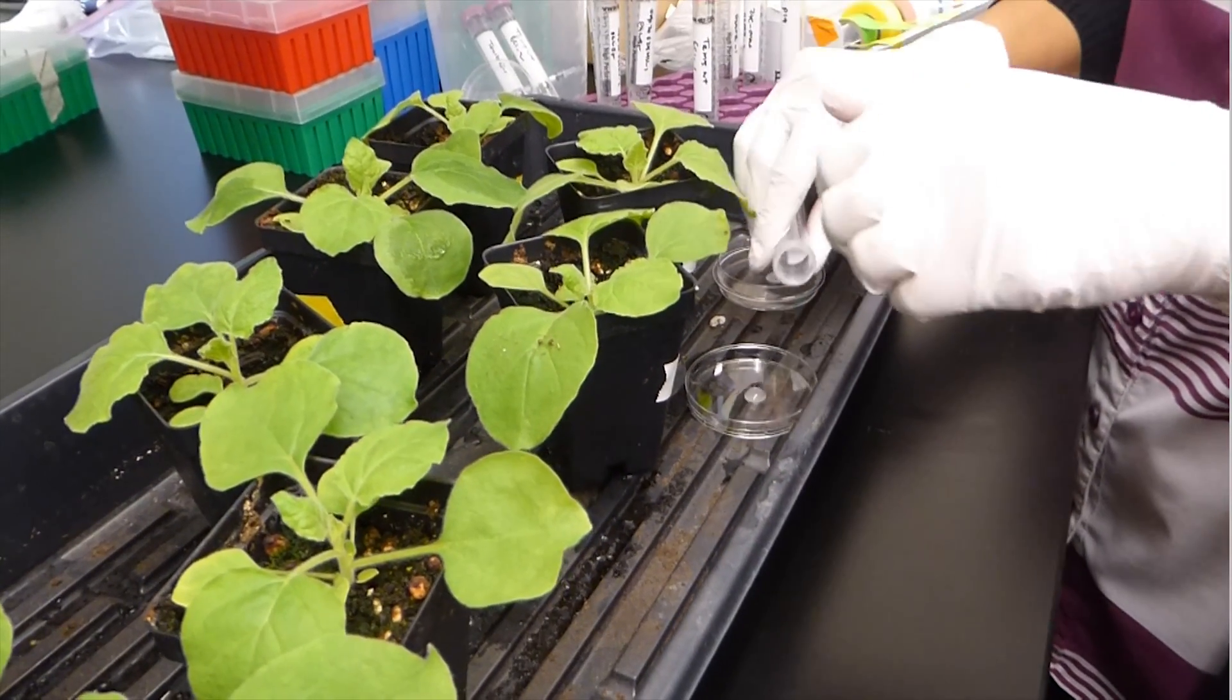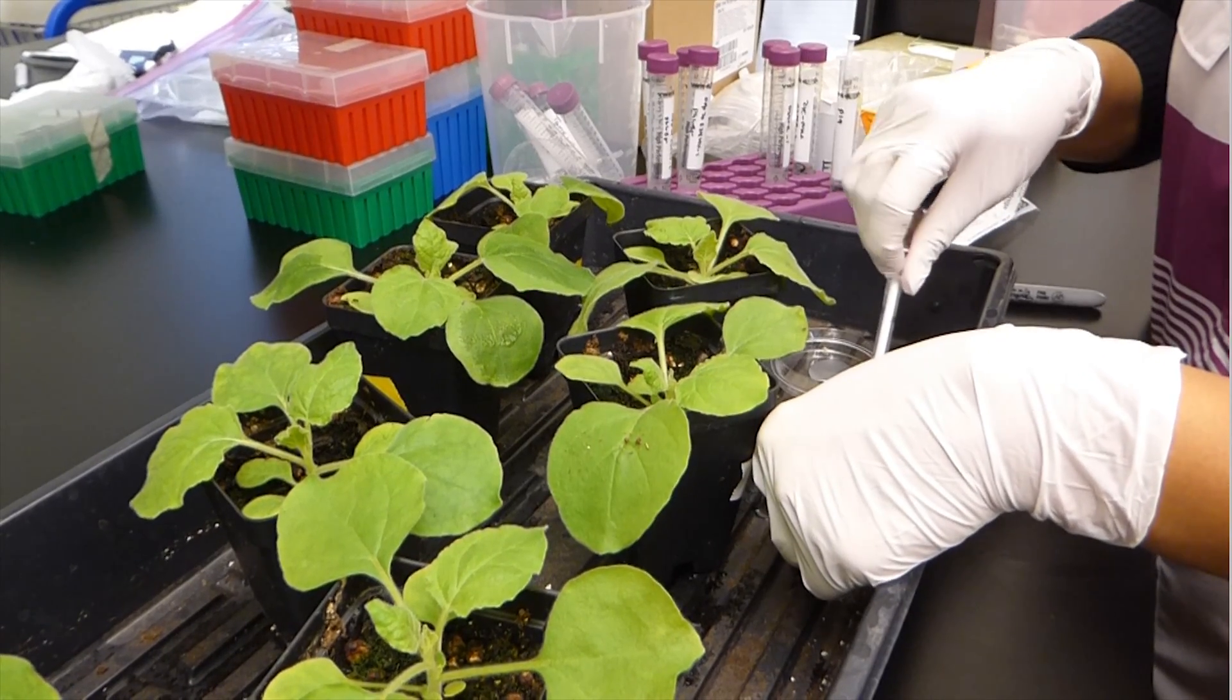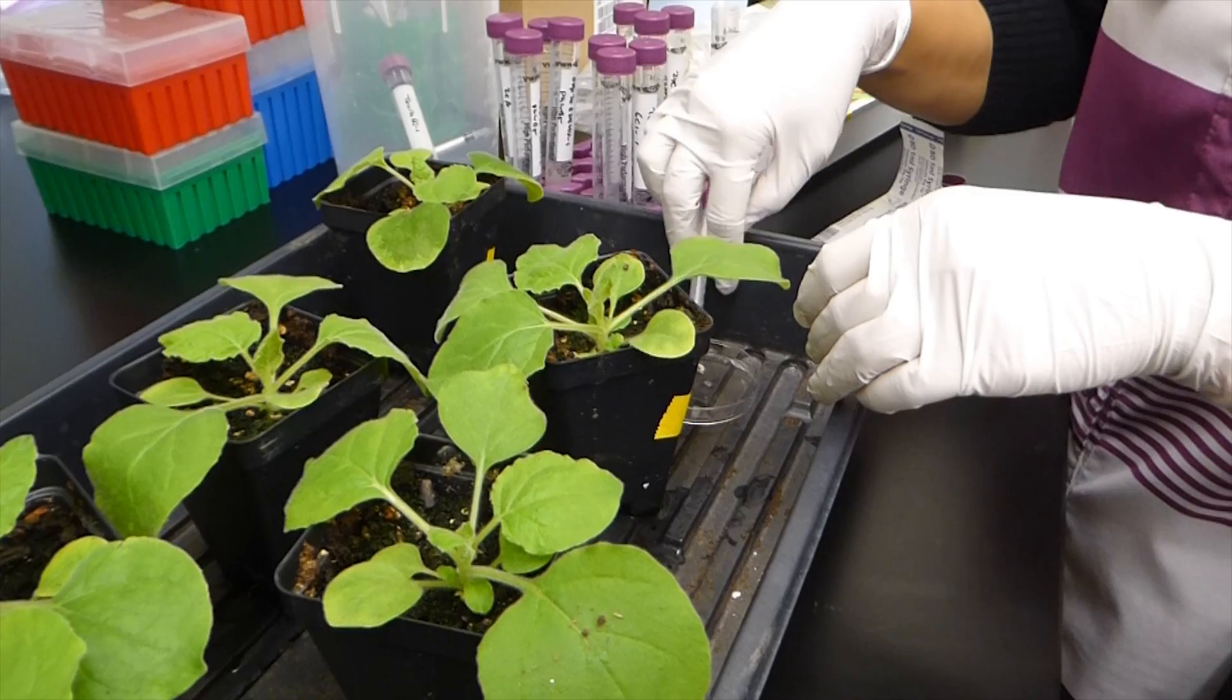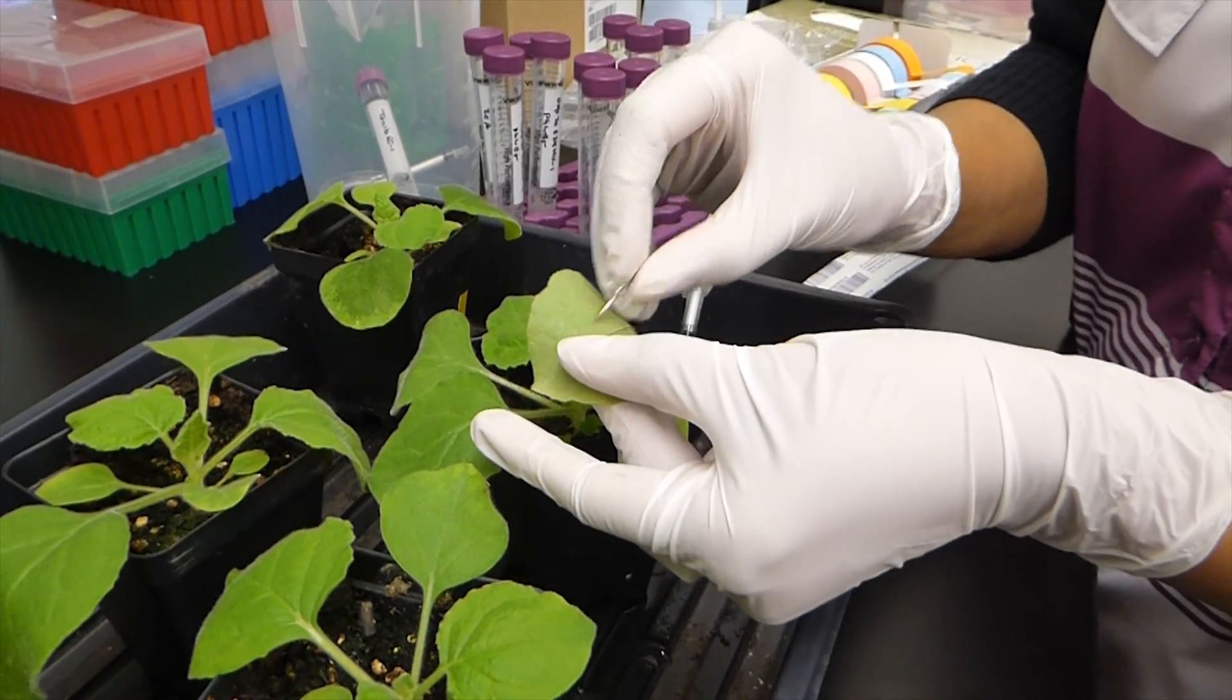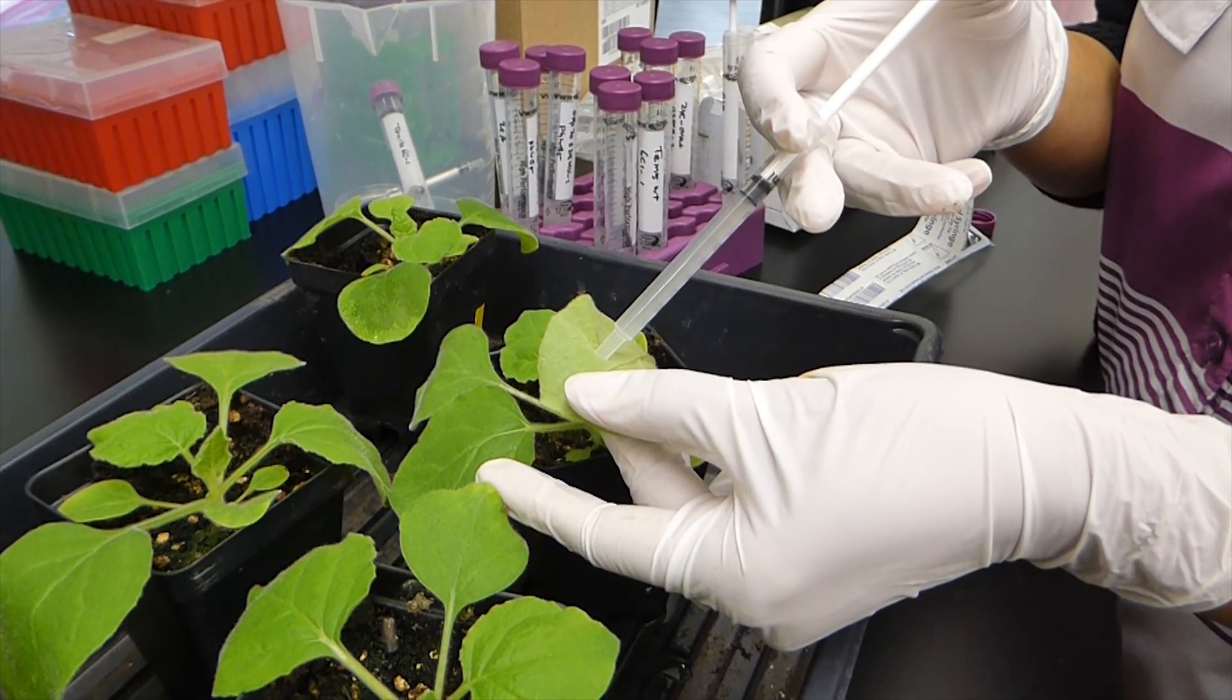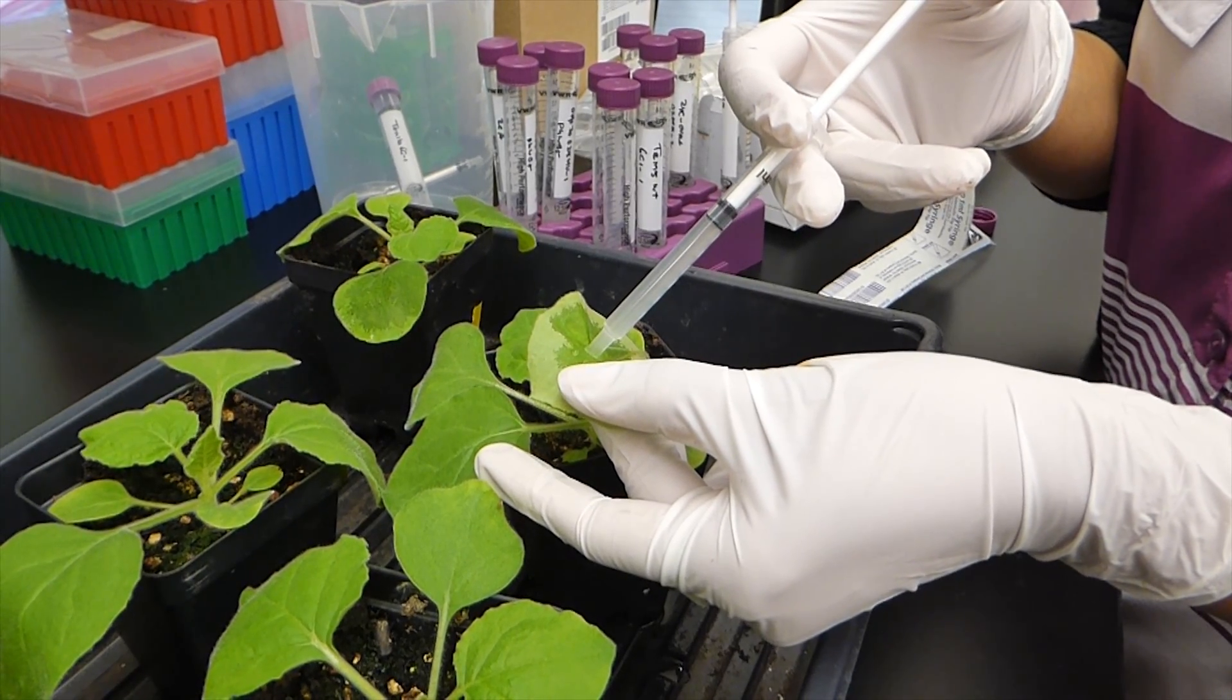Let's see agroinfiltration in action. First, we take our agrobacterium cells with our gene of interest and fluorescent marker. We can express one, two, or even three genes at a time to see how they interact. Then, prick the underside of a leaf with a pin and inject the solution. You can use multiple leaves per plant to make sure you have enough samples.